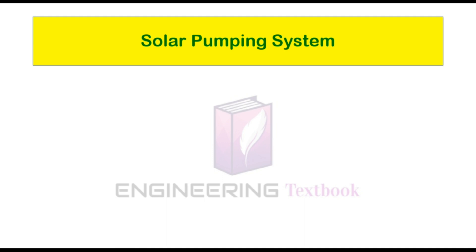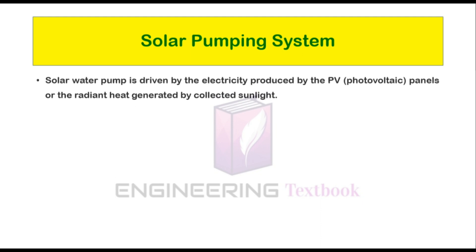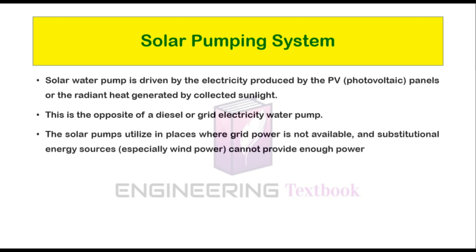Solar pumping system, also known as solar water pumping system. A solar water pump is driven by the electricity produced by photovoltaic panels or the radiant heat generated by collected sunlight. This is the opposite of diesel or grid electricity water pumps. Solar pumps are utilized in places where grid power is not available and other energy sources, especially wind power, cannot provide enough power. Solar water pumps can deliver water where power lines can't be reached.